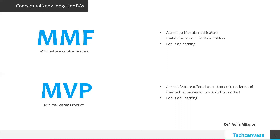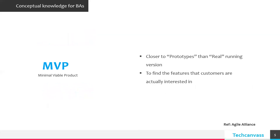Whereas MVP focuses on learning. MVP releases are those releases which are small in nature but quick, and are intended to get the reaction of the stakeholders so that the next move or next step in the development cycle can be taken. So the basic difference between MVP and MMF is that MVP is more closer to prototypes, whereas MMF is closer to the real product.